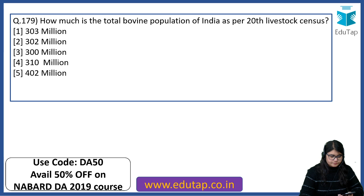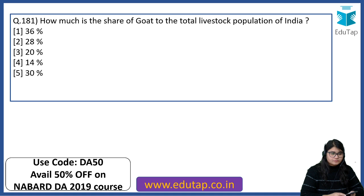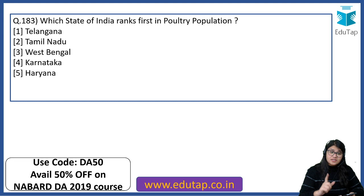How much is the total bovine population of India as per the 20th Livestock Census? The answer is 303 million. How much is the share of goats in the total livestock population of India? These questions are from the recent 20th Livestock Census. The answer is 28%. How much is the poultry population in India as per the 20th Livestock Census? Because this was released recently in October, it is important — the answer is 852 million. Which state ranks first in poultry population? The answer is Tamil Nadu.